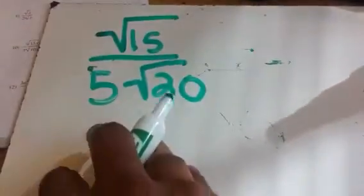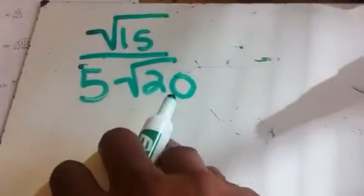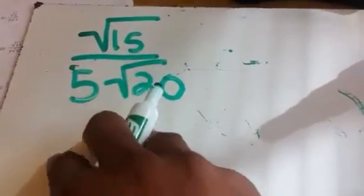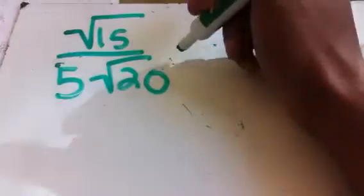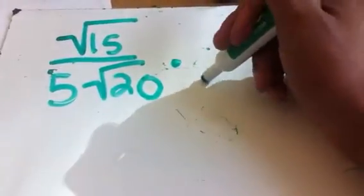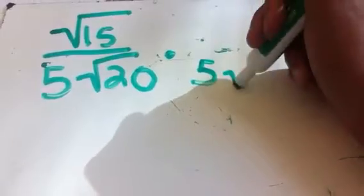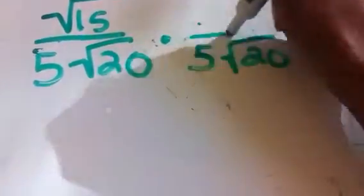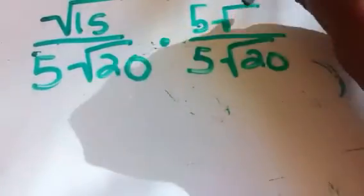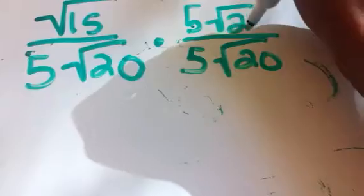Let's look at number 1 on the worksheet. We have the square root of 15 all over 5 times the square root of 20. We're going to take what's in the denominator and multiply it by both the denominator and the numerator, so we'll do 5 times the square root of 20 over 5 times the square root of 20.